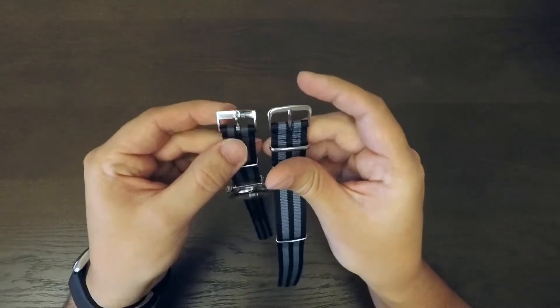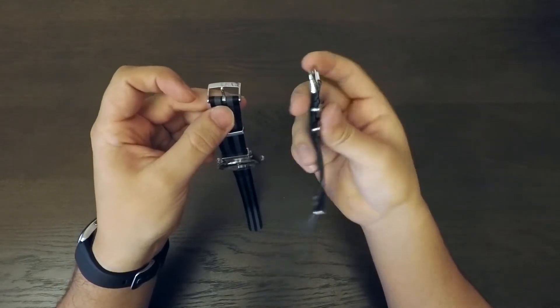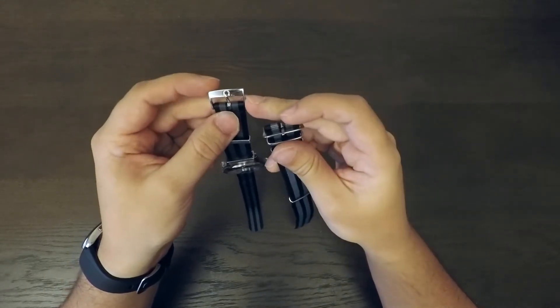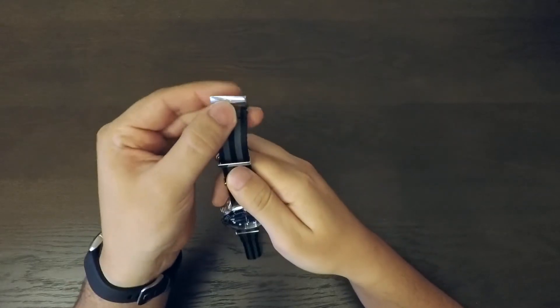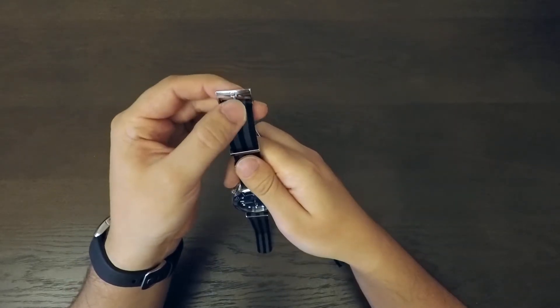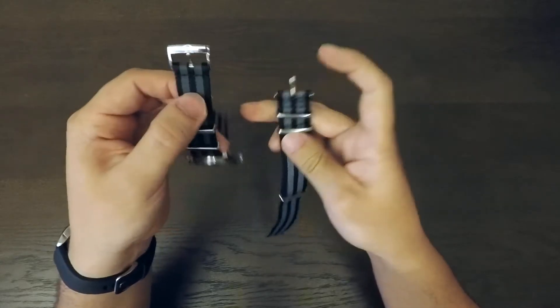So with the buckle, the generic one has a nice simple buckle, nothing wrong with it. On the Omega one, you've got a cool Omega buckle here with the sign as well. So that's just a nice little simple touch.